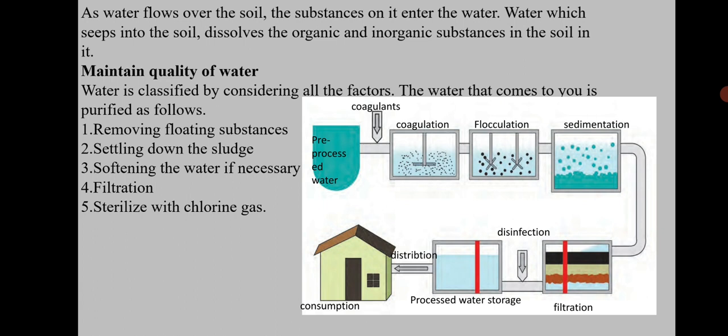Now let us see how to maintain the quality of water. Water is classified by considering all the factors. The water that comes to you is purified in the following ways: first, by removing floating substances; then settling down the sludge at the bottom; if the water is hard, it must be softened; then filtration is done; and lastly, the water is sterilized with chlorine gas.